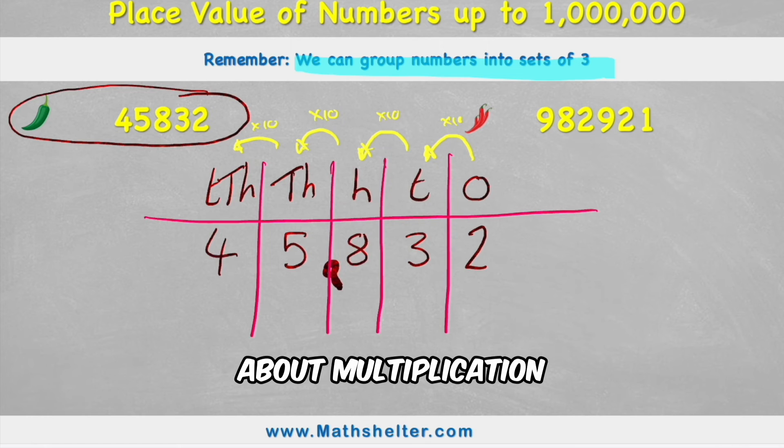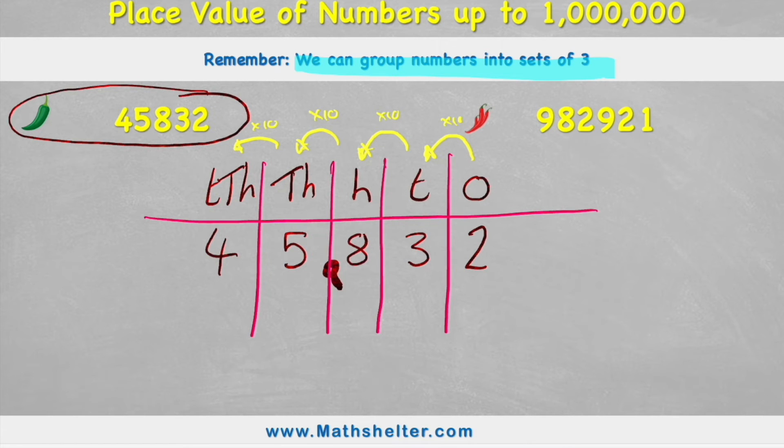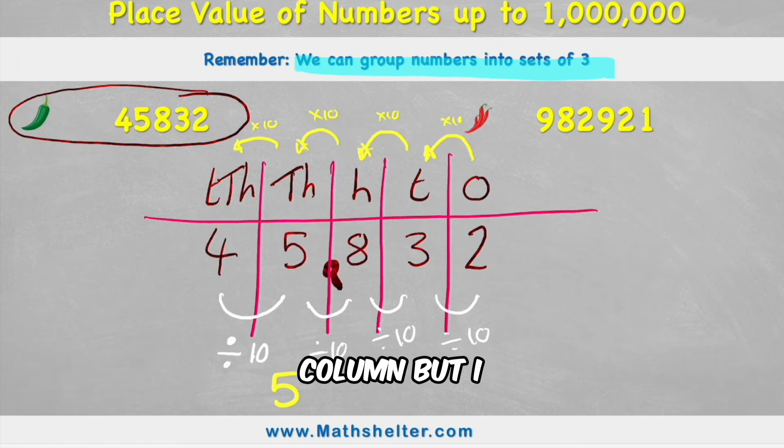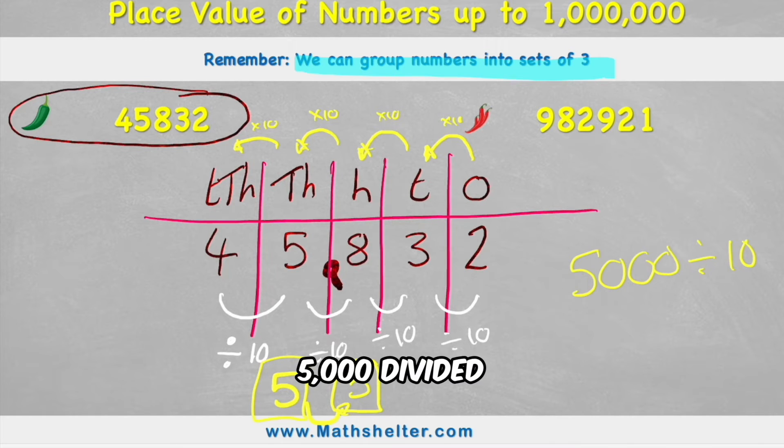Therefore, if we can think back to what we know about multiplication and division, if everything to the left is 10 times larger, what that means is that everything to the right must be 10 times smaller, or in other words, divided by 10. For example, if I have a 5 in the thousands column, but I want to move it into the hundreds column, it would be divided by 10. There was 5,000, now there's 500. 5,000 divided by 10 equals 500, and that's what the value of this 5 is in the hundreds column.